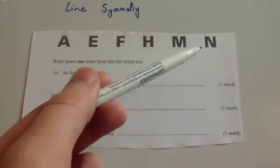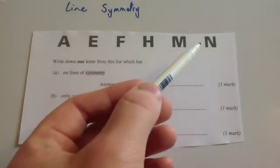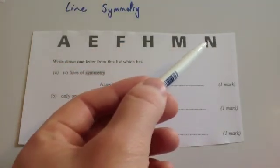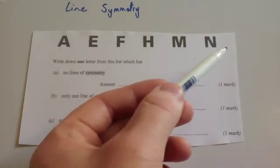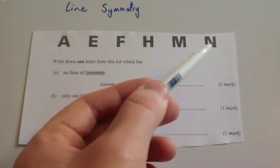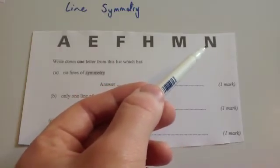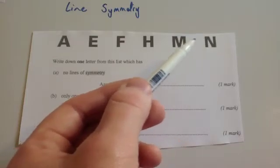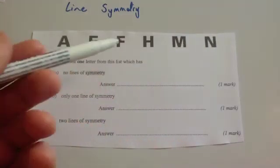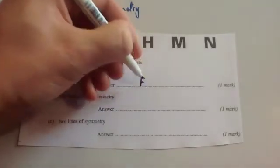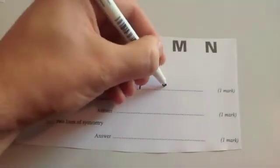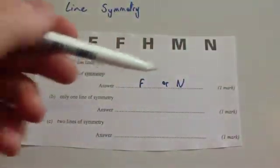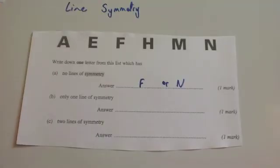Also, you can have N, because if you were to try and reflect it horizontally, it wouldn't reflect onto itself. Vertically, it wouldn't reflect onto itself. Diagonally? No, it wouldn't. So you could either have F or N. Obviously, I said one — I'm just writing two down to show that either one would work.